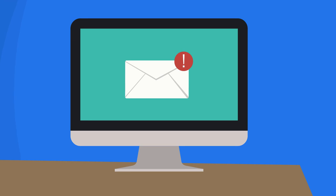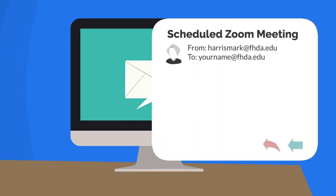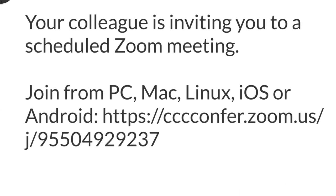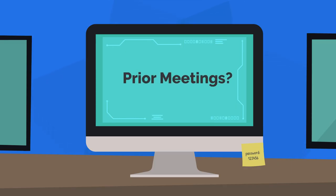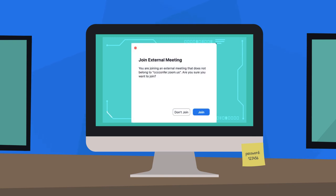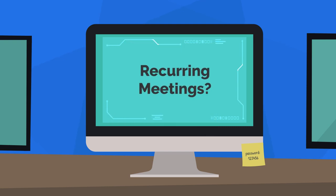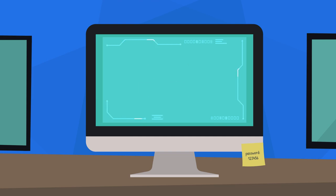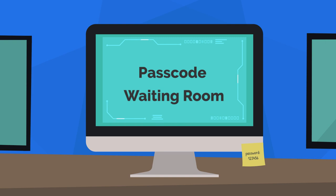The change in our Zoom meeting URLs, however, could cause some confusion when you log into a meeting from an Outlook invite or other Zoom invite. If the invitation was shared with you prior to August 24th, the URL in the invite still says cccconfer.zoom, not fhda-edu.zoom. When you join a meeting that was scheduled prior to August 24th, you may see a message — no worries, just select Join and you'll automatically be directed to the Zoom meeting. If you have already scheduled multiple meetings for the 2021 academic year, it may be a good time to update the Zoom URL, especially since Zoom will require either a passcode or waiting room on all meetings beginning in mid-September.